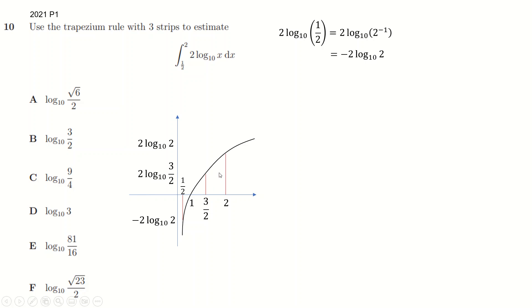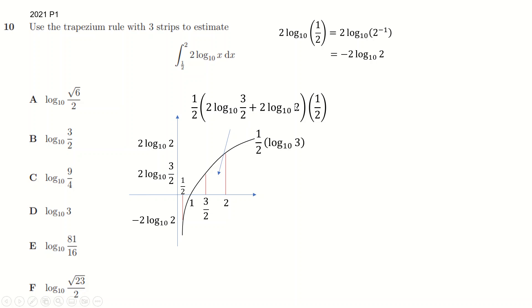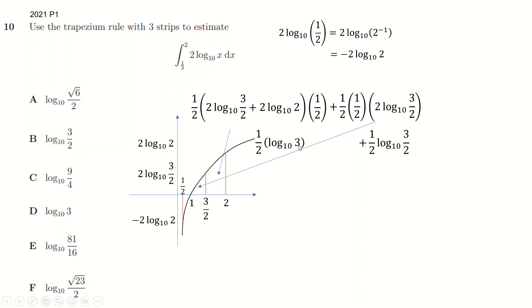Let's work out each area individually. For the first strip: distance across is a half, so we do a half times the sum of the two outputs times a half, because it's (a+b)/2 — giving two halves here, one for the distance across, one for the (a+b)/2 bit, then add them together. Log laws say we can multiply these, so 3/2 times 2 is just 3, and this half cancels with this 2, leaving 1. The second strip is just a triangle: distance across a half, so it's a half times a half times this value. Log laws again mean we multiply inside.